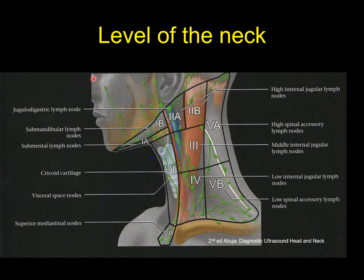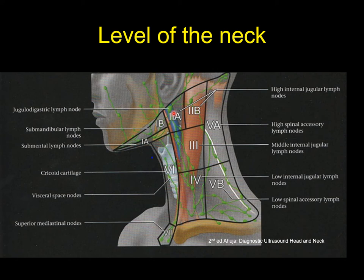Let me take you through the levels of the neck, which you may have covered in the anatomy part of the ultrasound course. The neck is divided into seven levels. Level 1 is split between 1a and 1b, which is the submental region and the submandibular region. These are the submental nodes and the submandibular nodes. The facial nodes drain into this, as well as the parotid lymph nodes coming into level 2, which is split between 2a and 2b.